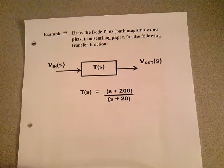Here's my solution. On example number 7, on page 220, I had to get it in a standard form. My standard form was 10 times the quantity S over 200 plus 1, divided by S over 20 plus 1. My K0 constant was 10. There's no single S term, so my dB is 20 dB. First break frequency was 20 radians per second — it was a pole. My second break frequency was 200 radians per second — it was a zero.